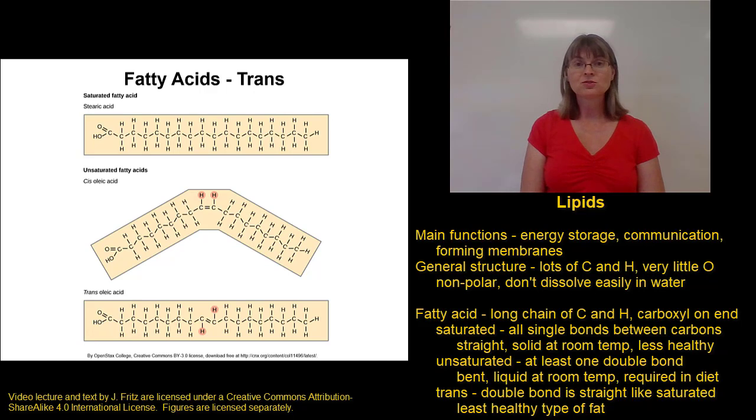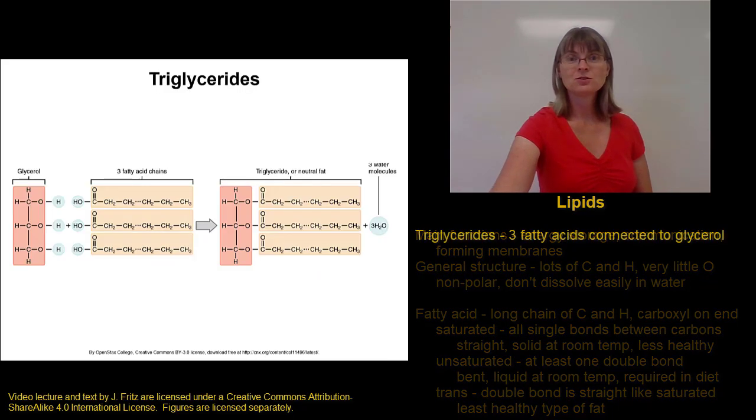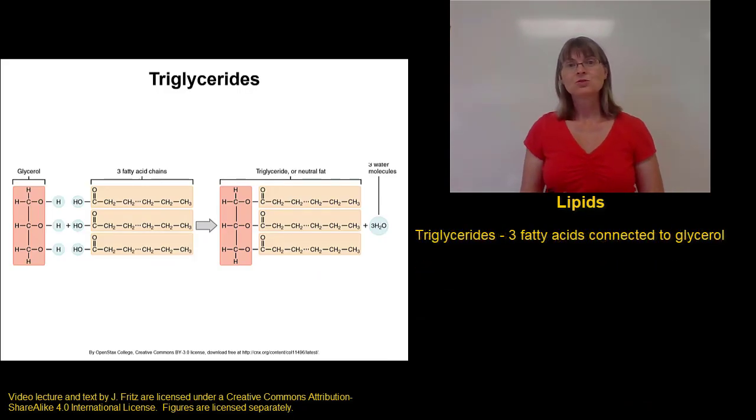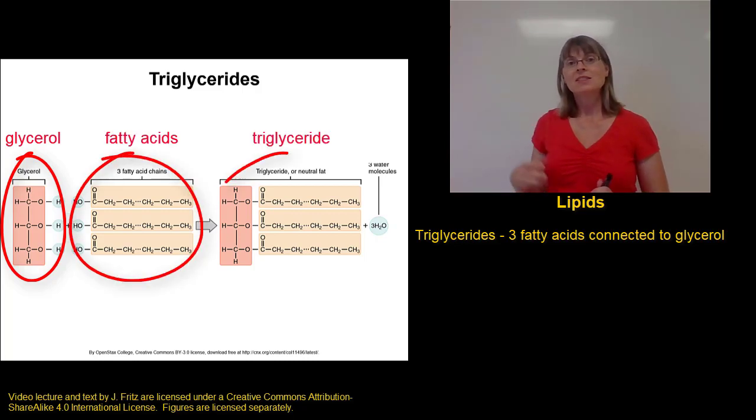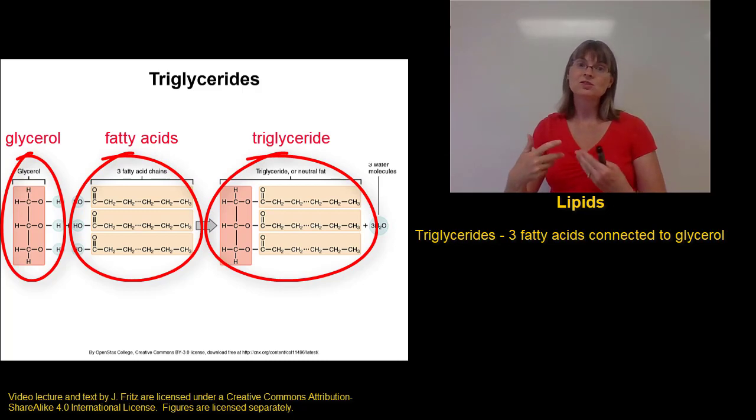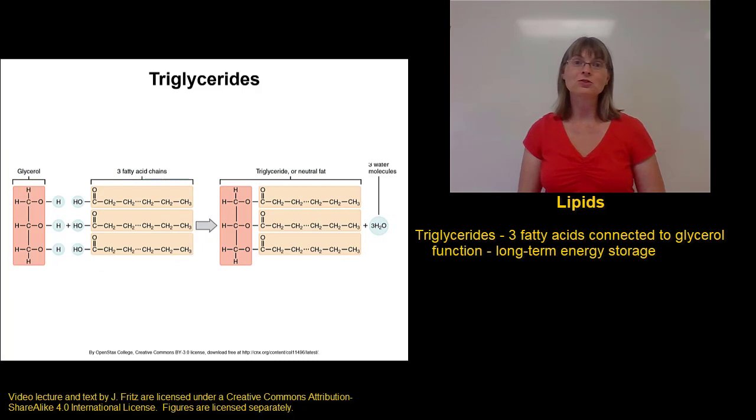Now that we've talked about the structure of fatty acids, we can talk about how we can combine fatty acids to make more complex lipids. The first type I want to talk about are the triglycerides. Triglycerides are formed by taking three fatty acids and hooking them to a molecule of glycerol. Glycerol is a simple three-carbon molecule that basically just gives us a docking port for our three different fatty acids. These three fatty acids are joined to glycerol by dehydration reactions. The main function of triglycerides is long-term energy storage.